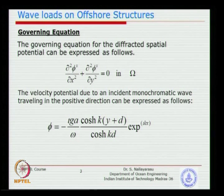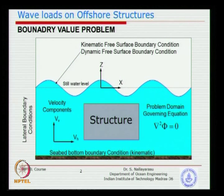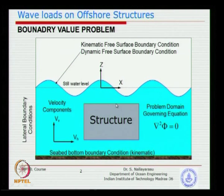We already know the incoming velocity potential due to the incident wave — the wave is coming from the left side and that is already known from wave theories. What is of our interest is the wave velocity potential scattered due to the presence of the structure or body. For a simple rectangular body, applying a boundary condition on the top surface, sides, or bottom is very easy. I can apply a boundary condition at minus y or minus z equal to some depth.